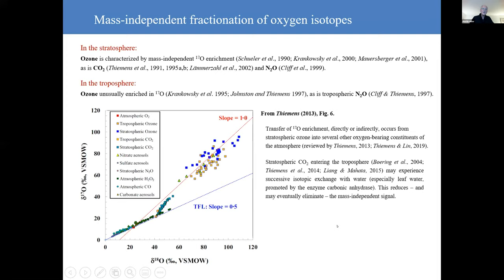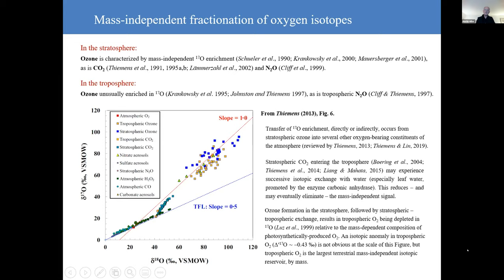And of course there's stratospheric tropospheric exchange, and as a result CO2 entering the troposphere can then experience successive isotopic exchange with water. And this reduces and may eventually eliminate that mass independent signal. And because of the production of ozone by photochemistry acting on molecular oxygen in the stratosphere, followed by stratospheric tropospheric exchange, this means that the residual tropospheric O2 is depleted in 17 O relative to mass dependent composition. And we can quantify that. It's not obvious at the scale of this figure, but actually tropospheric oxygen is the largest terrestrial mass independent isotopic reservoir.